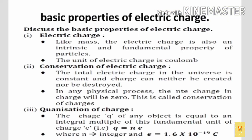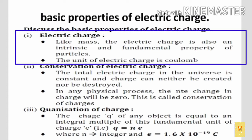Next one is the basic properties of electric charge. First one: electric charge. Just as mass is said to be the basic property of all objects in the universe, likewise the electric charge is also said to be the intrinsic and fundamental property of particles. The unit of electric charge is coulomb.